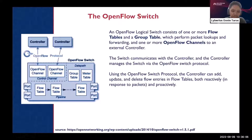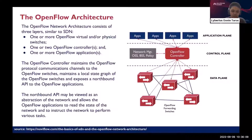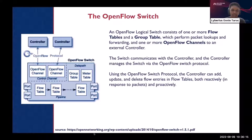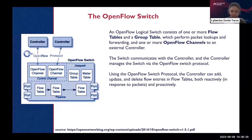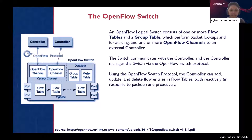Based on the diagram here — taken directly from opennetworking.org — an OpenFlow logical switch would contain a group table, flow tables, channels that communicate to your controllers, and metering. Metering is for monitoring KPIs — key performance indicators — for that switch, as well as the logical ports. Using the OpenFlow switch protocol, the controller can add, update, and delete flow entries in flow tables, both reactively and proactively.